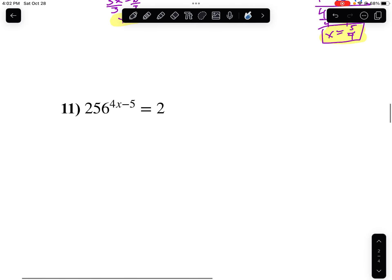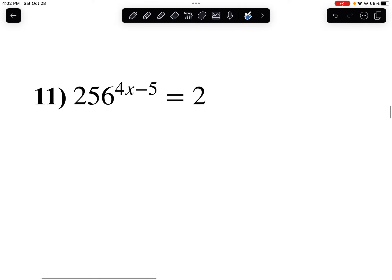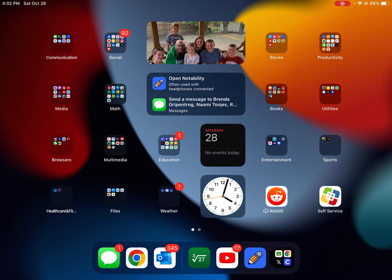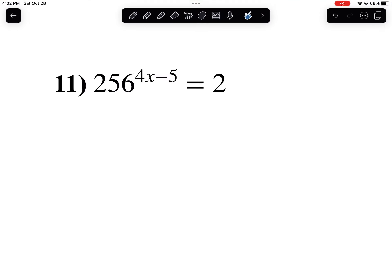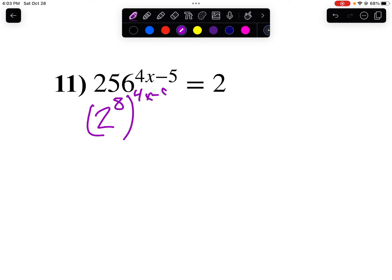And let's take a look at number 11. Now I'm going to write 256 as a power of 2. So I'll use my calculator and I will guess power of 2. If I go 2 to the 7th, that's 128. So I'm guessing it's 2 to the 8th. Yeah, 2 to the 8th is 256. So I'm going to rewrite that as 2 to the 8th, raised to the 4x minus 5 power, equals 2 to the 1st.